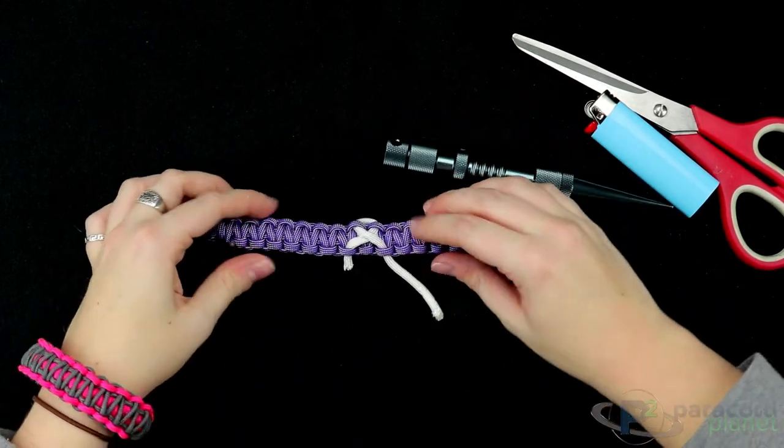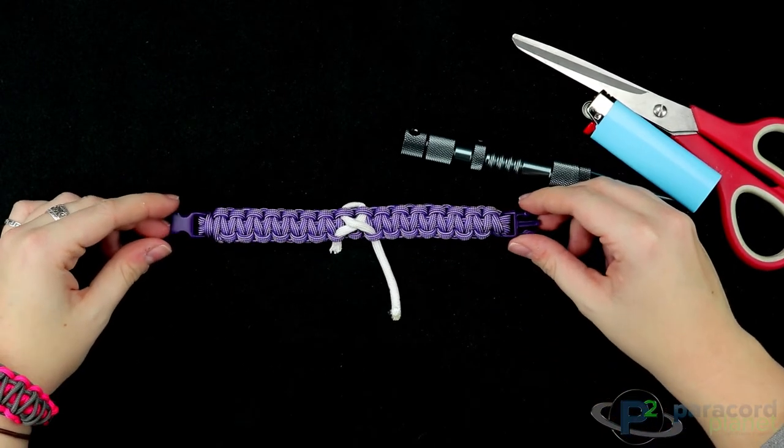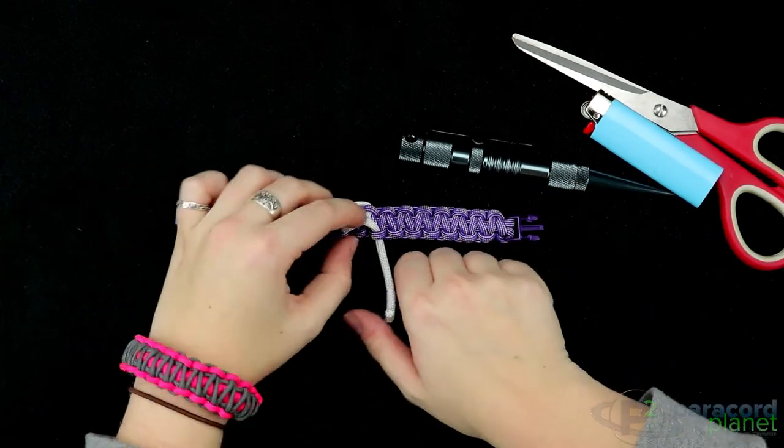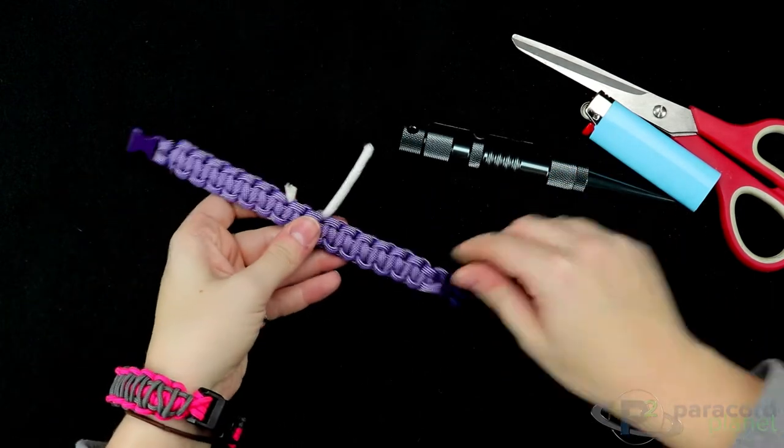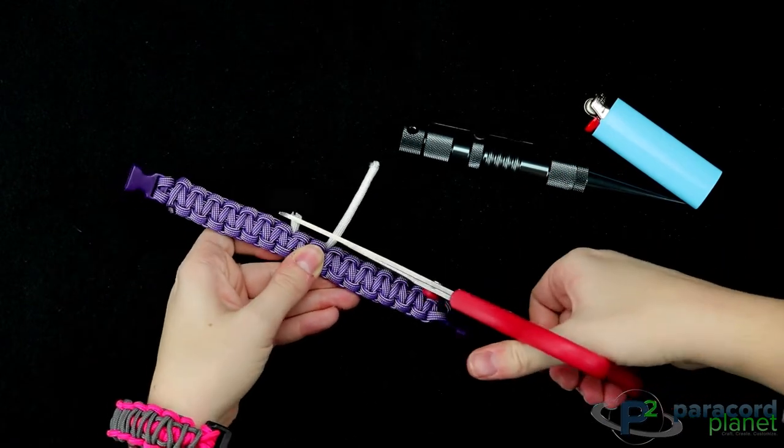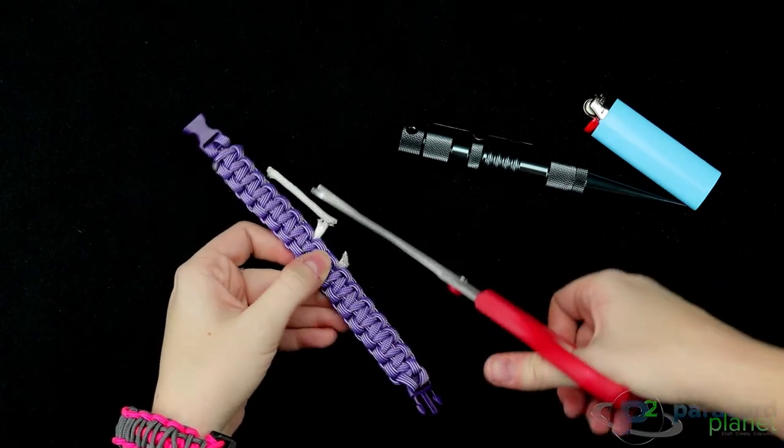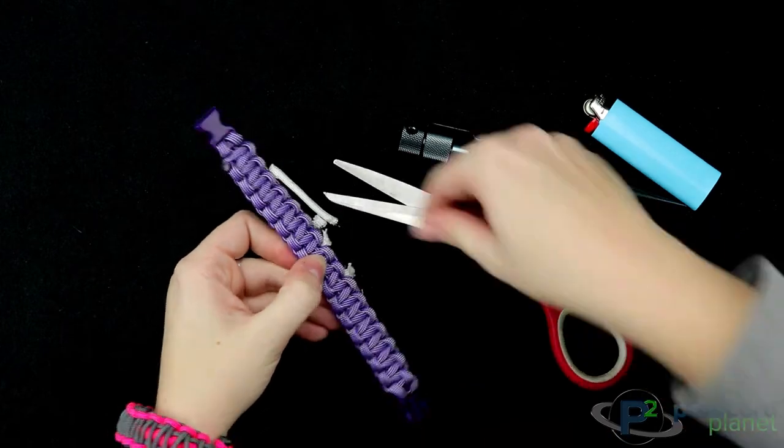So now as you can see, our awareness ribbon has been completed. Now all we have to do is just cut the ends and seal them off with our lighter. Just like you would any other paracord project. So we'll take our scissors and we'll cut that first bit off and the second bit off.